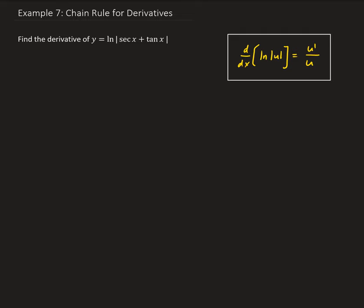That's why we have the absolute values here in place. It turns out that the derivative of the natural log of the absolute value is going to be 1 over u times u prime, assuming that u is a differentiable function of x.